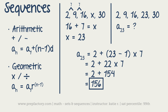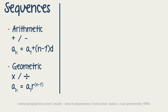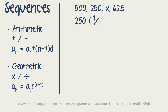The same concept applies to geometric sequences: if there's an x already in the problem, you don't need the formula. For example, given 500, 250, x, 62.5 — since 250 is half of 500, the ratio is one-half. So 250 × (1/2) = 125, meaning x equals 125.